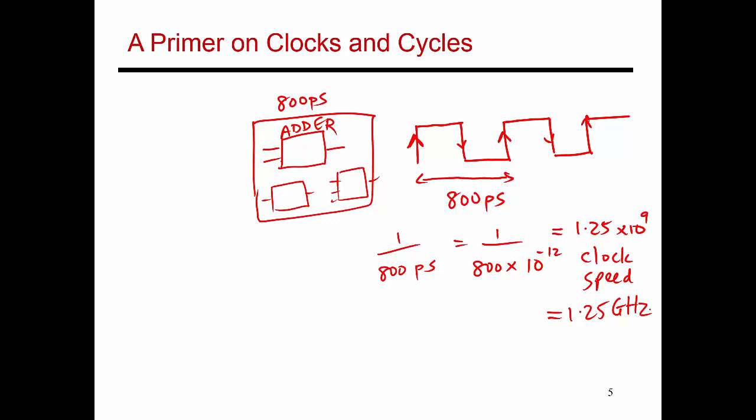While this adder is doing its operations, these other circuit blocks over here are also doing various computations. And we picked a cycle time of 800 picoseconds because that was the longest circuit. So maybe this circuit takes 700 picoseconds. This one takes 650 picoseconds. And so essentially we want to make the cycle time long enough that the slowest circuit has enough time to finish its task.